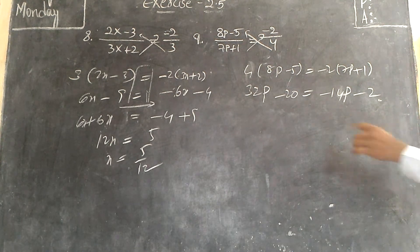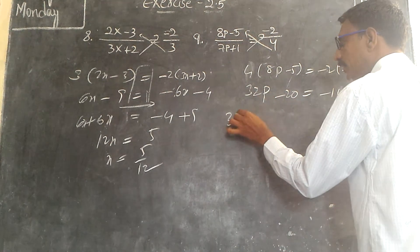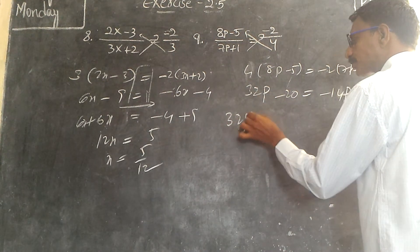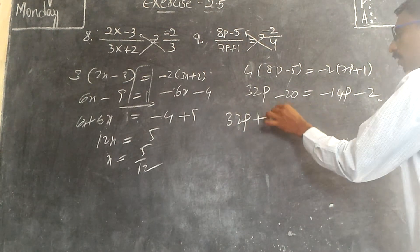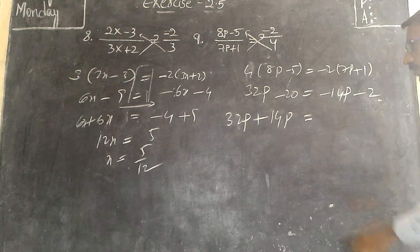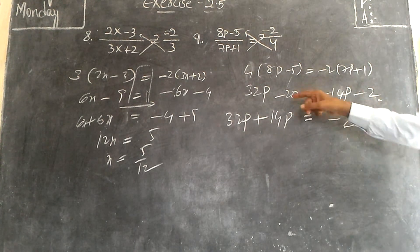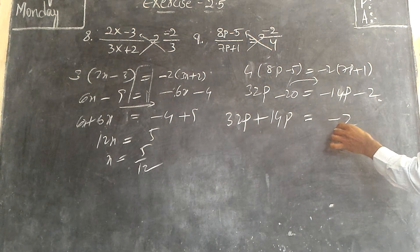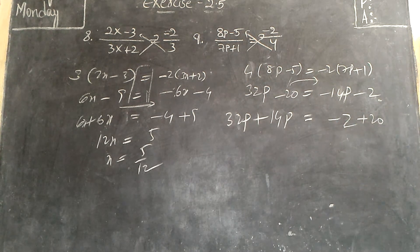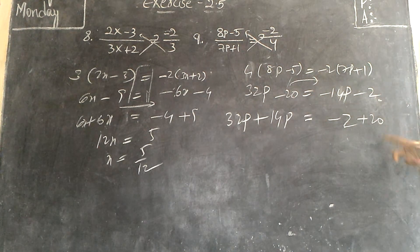Now, very simple. Separate the variables. Minus 14p will go to that side with a plus sign. Here, we already have 32p. By adding 14p equals to, it is here only, it is in the right hand side, but transposing this plus 20, minus 20 will go to this side, plus 20.